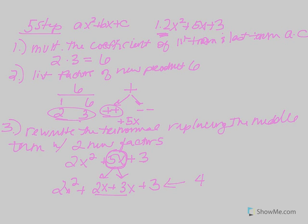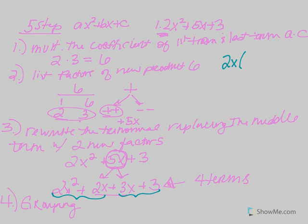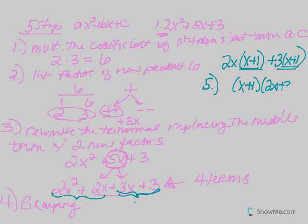Now we have four terms. Steps four and five go together — factor by grouping. From the first two terms, pull out a 2x as the GCF, leaving x + 1. From the second two terms, 3x + 3, pull out a 3, leaving x + 1. Step five: pull out that (x + 1), and you're left with (2x + 3). That's your final answer. You can check by multiplying using FOIL.